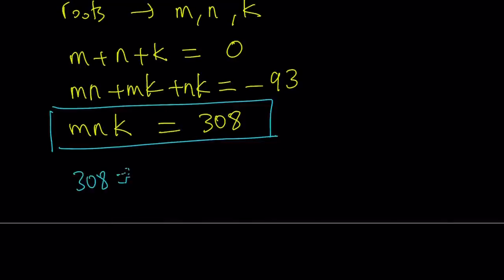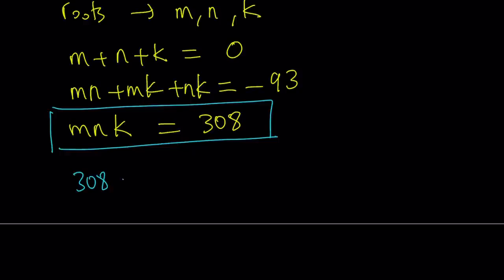308 can be written as 2 times 154, 154 can be written as 2 times 77, and 77 can be written as 7 times 11. Okay. Wow, that's cool. So that is the prime factorization. If you want to write in power, that's fine too, but I'd like to keep it that way. 2, 2, 7, 11.